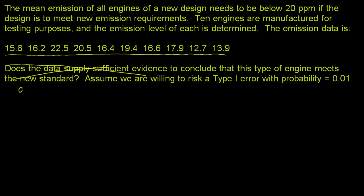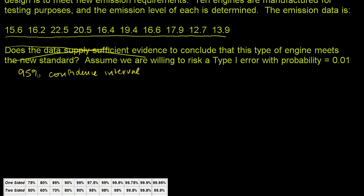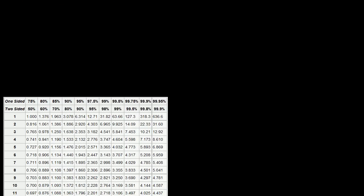So we want to find a 95% confidence interval. And as you can imagine, because we only have 10 samples right here, we're going to want to use a t-distribution. And right down here I have a t-table.